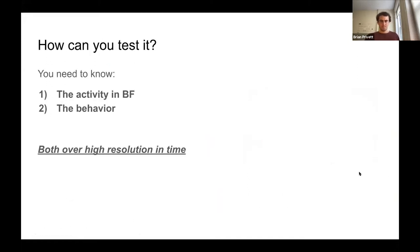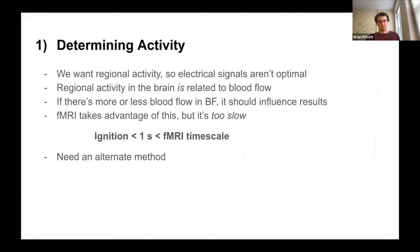To test this, we need the activity in basal forebrain and the behavioral output, both in high resolution over time. This is because ignition is very short — on the scale of a few hundred milliseconds. Your brain gathers visual input, has a quick feedforward wave, then some feedback processing, and it all happens in under a second. Traditional methods like fMRI operate at a timescale of over a second, so it's very hard to get the right information.